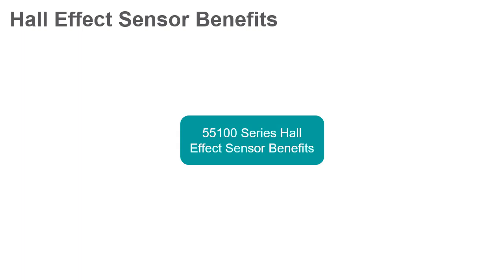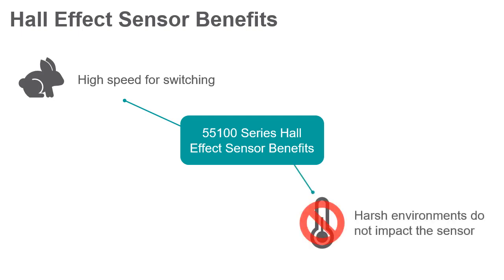The 55100 series Hall effect sensor has many benefits. It has a high speed for switching, up to 10 kHz. Harsh environments do not impact the sensor. It may be operated in either a static or dynamic magnetic field, and it has position sensing capabilities.